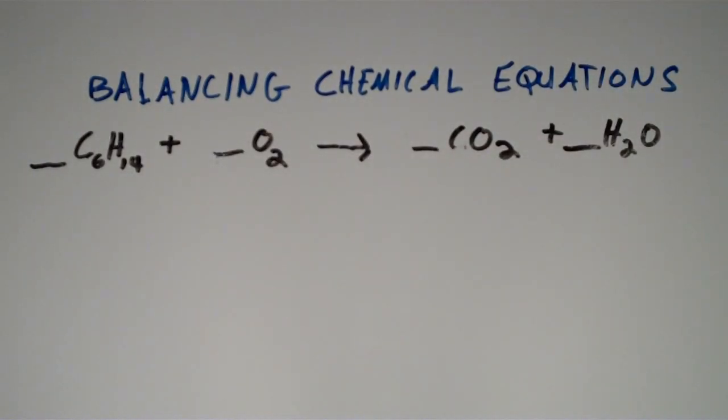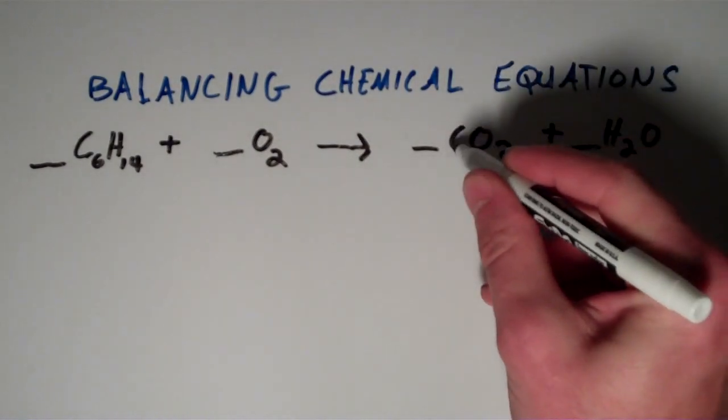Here we have the equation for the combustion of hexane. So we have hexane, C6H14, plus O2 yields CO2 and H2O.